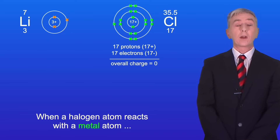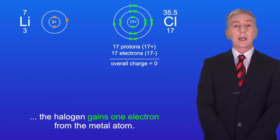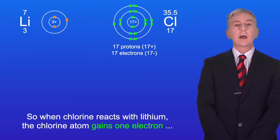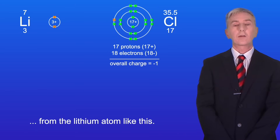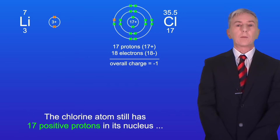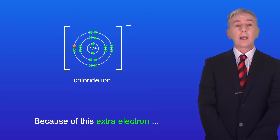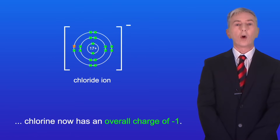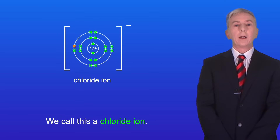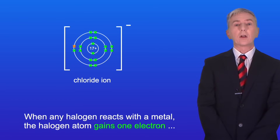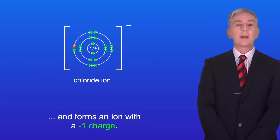When a halogen atom reacts with a metal atom, the halogen gains one electron from the metal atom. So when chlorine reacts with lithium, the chlorine atom gains one electron from the lithium atom like this. The chlorine atom still has 17 positive protons in its nucleus but it now has 18 negative electrons. Because of this extra electron, chlorine now has an overall charge of negative one. We call this a chloride ion, and an ion is an atom with an overall charge. When any halogen reacts with a metal, the halogen atom gains one electron and forms an ion with a negative one charge.